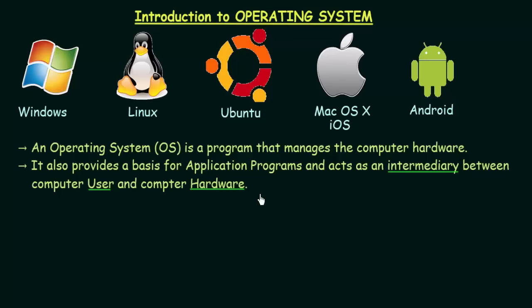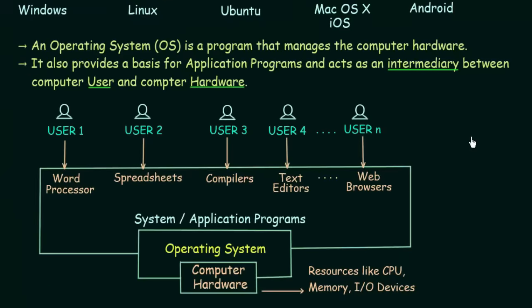Now let us take a diagram to understand the basic structure of a computer system. In the lowermost level we have the Computer Hardware, which consists of resources like CPU - the Central Processing Unit - then memory, and IO devices. Memory consists of primary memory like your RAM and secondary memory like your ROM.